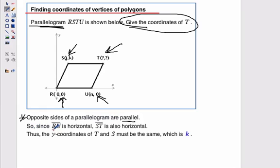And since RU is horizontal, you notice RU is horizontal because we see that the y-value at R and the y-value at U are both 0. So that indicates that RU is parallel to the x-axis, or in other words, horizontal. And that means ST is also horizontal.